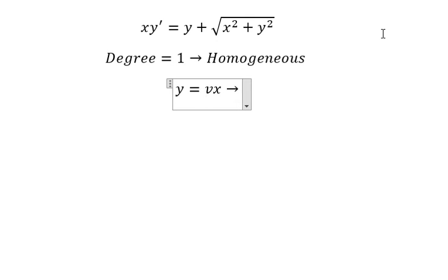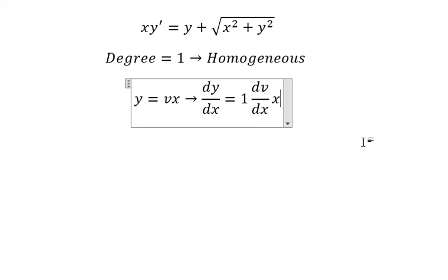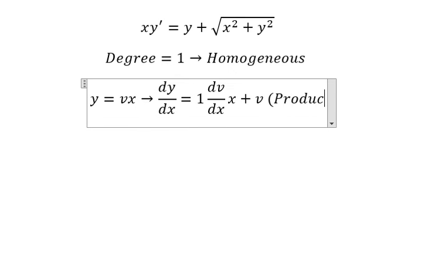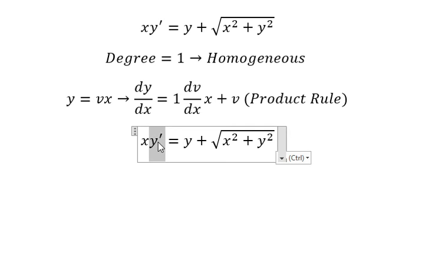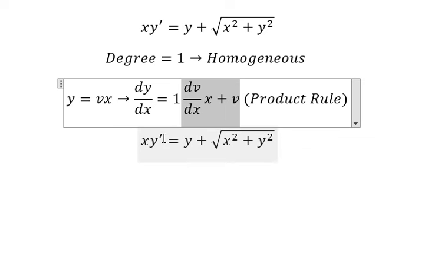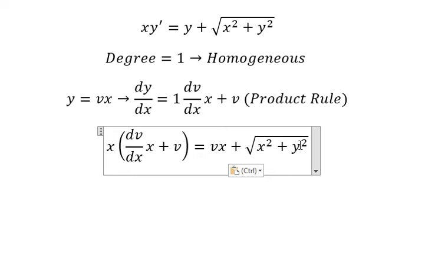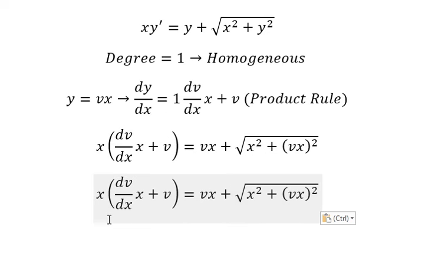We need to do the first derivative for both sides. We have the first derivative of v — we have dv over dx multiplied by x, and this one gives us v. That is about the product rule. So we change y by vx and substitute into the equation. Next, x multiplied by this one gives us the new form.